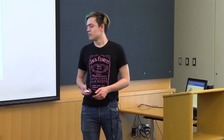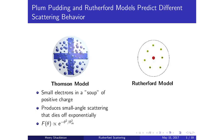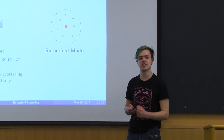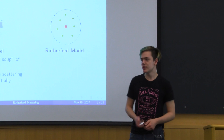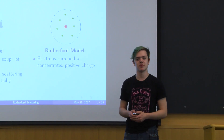Rutherford comes along and says he doesn't know about this and proposes a new model. In the Rutherford model we have our negatively charged electrons, but instead of a soup of positive charge, we have a densely packed nucleus in the middle. Because this nucleus is so dense and tightly packed, it allows for much stronger interactions between atoms when it comes to scattering.